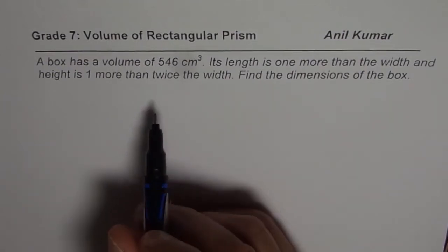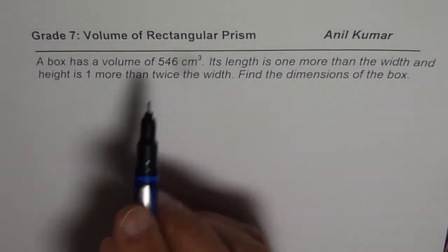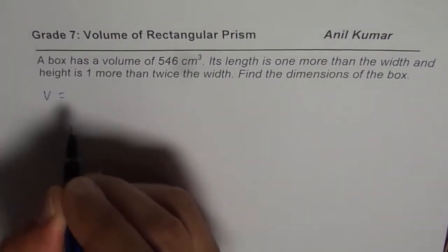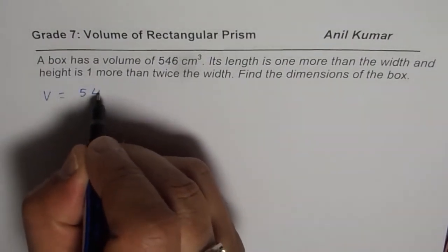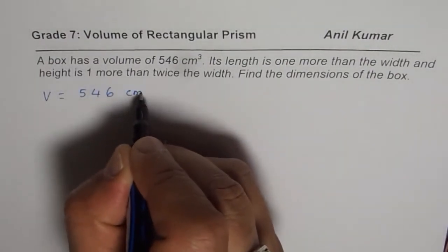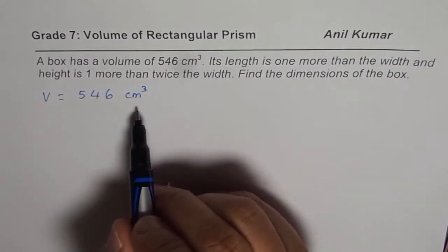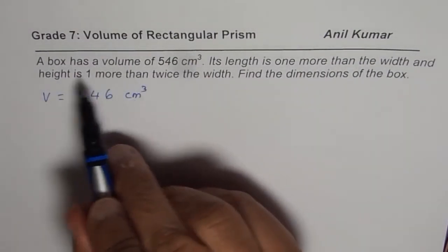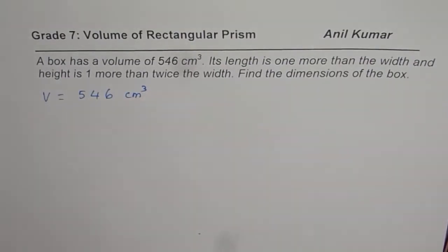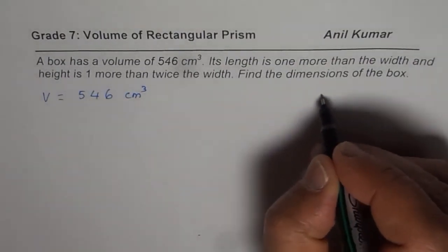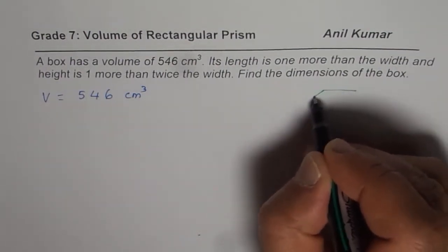So the question here is we are given volume. Volume is given to us as 546 cm³. And we need to find dimensions of the box. When we say box, we are trying to say rectangular box. So let me sketch a box. So we'll have something like this, rectangular box.